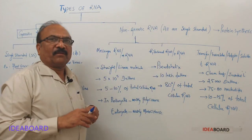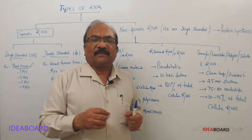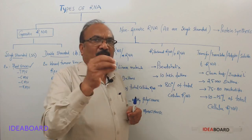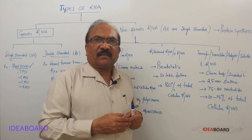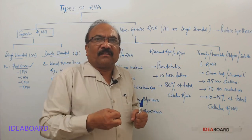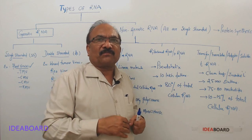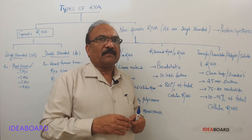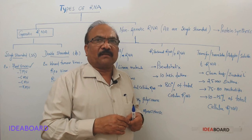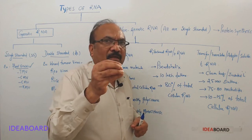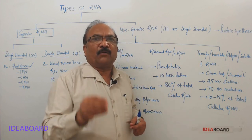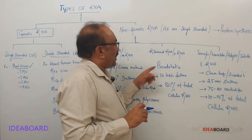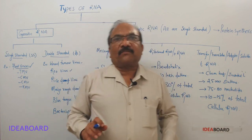Messenger RNA will bring the message from the DNA for the formation of a protein - that is why it is called messenger RNA. Ribosomal RNA is a structural RNA because it is involved in the formation of ribosomes and it is present in ribosomes. As you studied in cell biology, the ribosome is chemically composed of only two things: riboproteins and rRNA. Ribosomes are essential for protein synthesis.